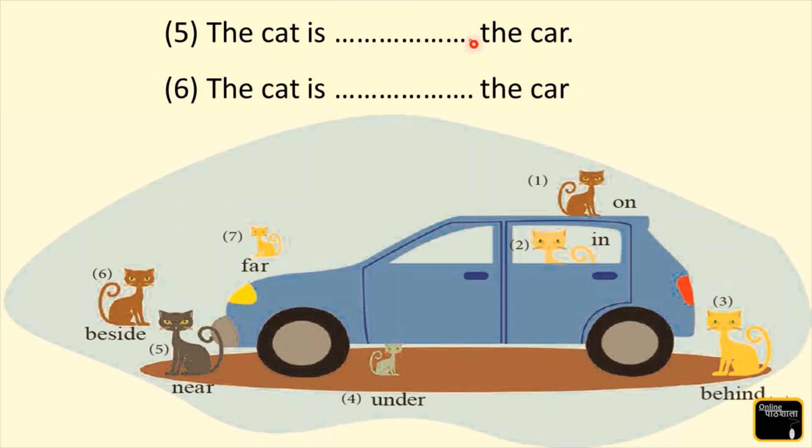Question 5: The cat is ___ the car. Where is the fifth number cat? Yes, where is it? Here. Yes, the cat is near the car. So we are going to write 'near'.